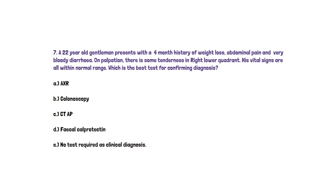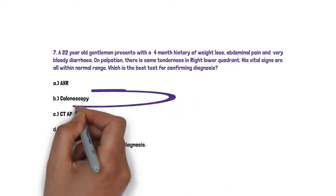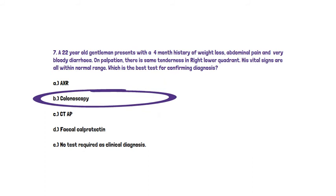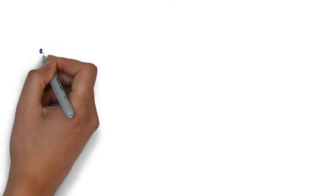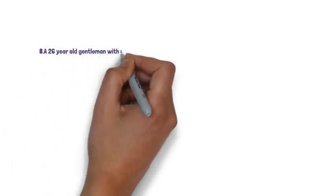The correct answer here is B. Colonoscopy is the best test. We are suspecting ulcerative colitis, and we are likely to see crypt abscesses on a biopsy taken at colonoscopy. Some of you may have put faecal calprotectin, option D — whilst that is a useful test for identifying inflammatory bowel disease, it's not very good at differentiating between Crohn's disease and ulcerative colitis. This question highlights the importance of reading the question, because we do use faecal calprotectin in investigations, but the best test for confirming diagnosis is colonoscopy.